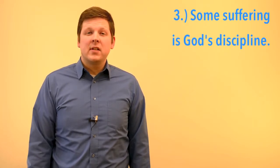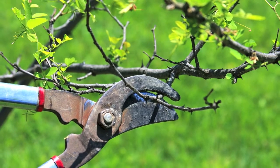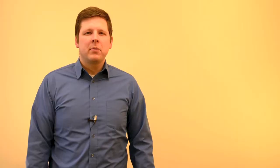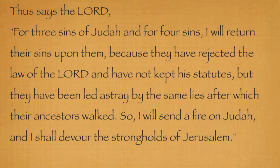Number three, some suffering is God's discipline. Scripture refers to God as refining or pruning the people that he wants to make productive and better believers and better followers. Jesus says, every branch that bears fruit God prunes to make it bear more fruit. That's in John chapter 15. Number four, suffering comes from God's justice. There are many people in the Bible who are suffering as a consequence of their failure to abide by God's law and the prime example would be the destruction of Jerusalem and the exile of its citizens as a result of their worshiping false idols and exploiting poor people. This is from the book of Amos. Thus says the Lord, for three sins of Judah and for four sins, I will return their sins upon them because they have rejected the law of the Lord and have not kept his statutes, but they have been led astray by the same lies after which their ancestors walked. So I will send a fire on Judah and I shall devour the strongholds of Jerusalem.